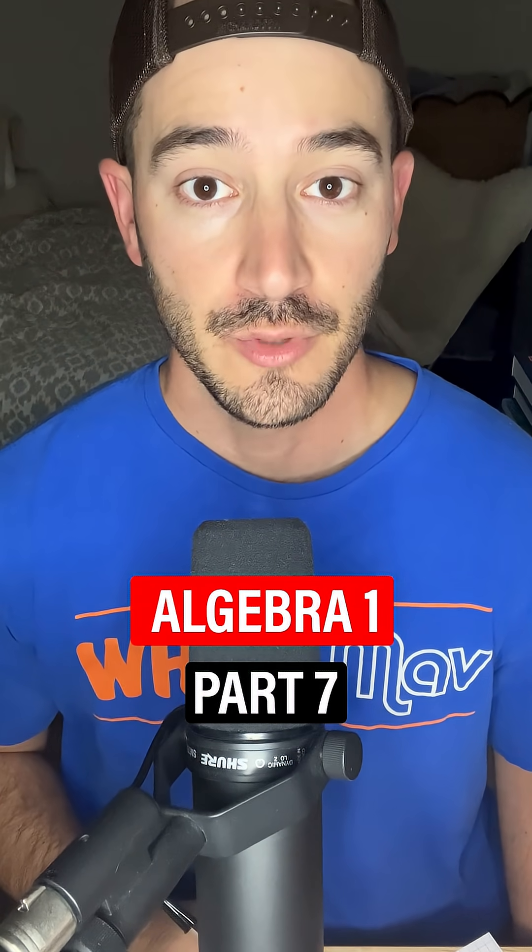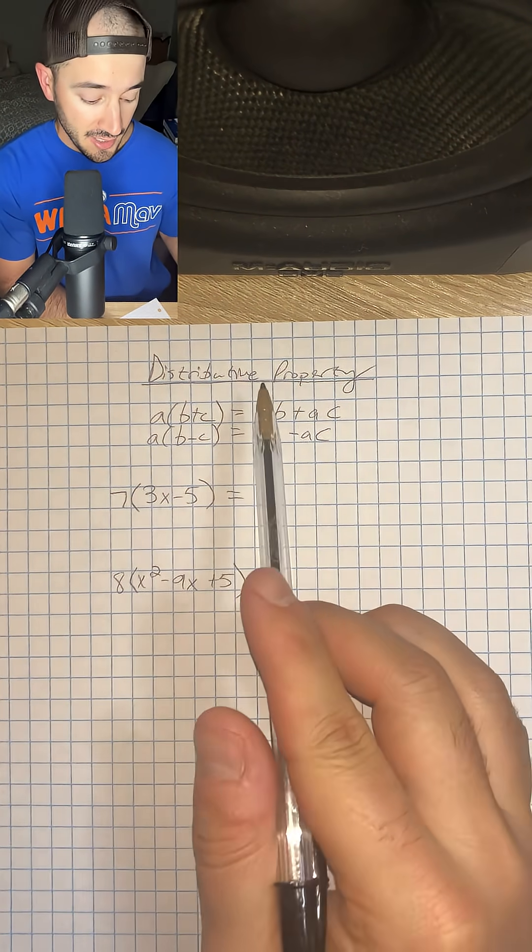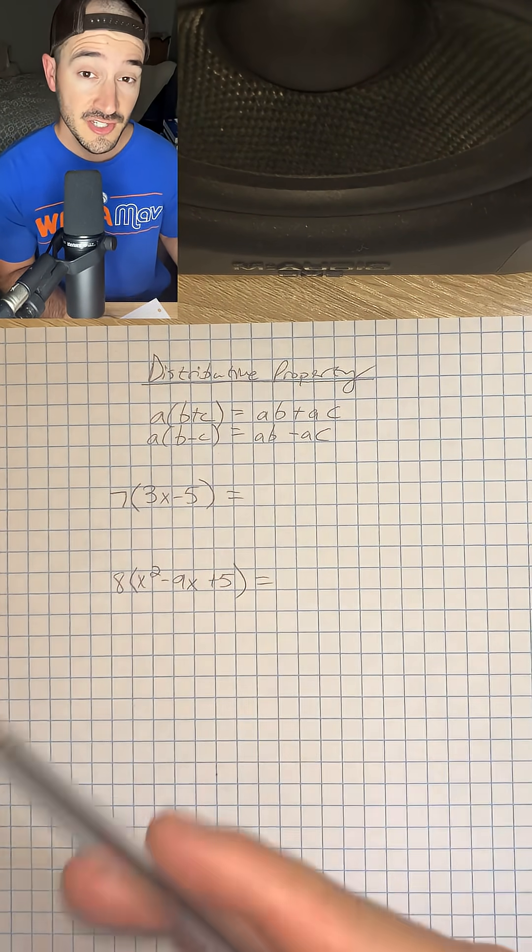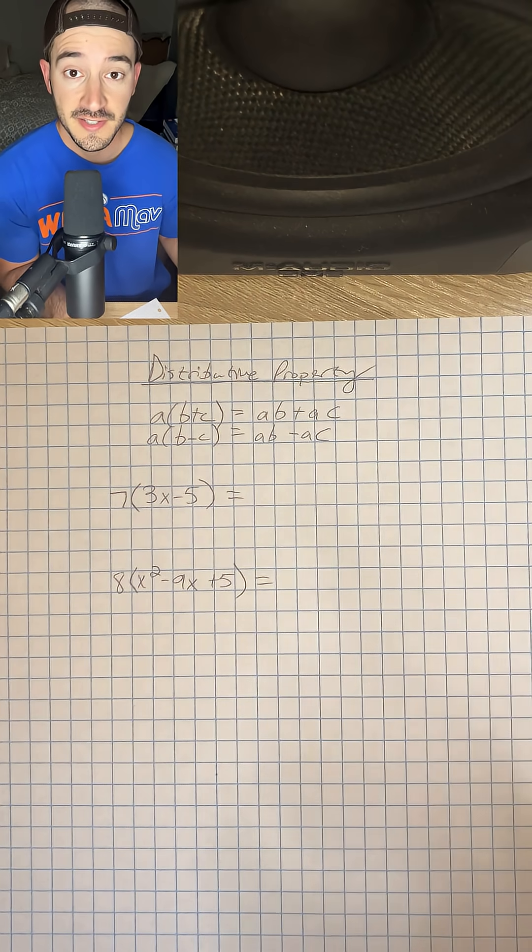This is everything you need to know for Algebra 1, Part 7. We're talking about the distributive property today, and you may have already heard of it, but basically it's just a way to rewrite expressions and use multiplication to simplify and solve.